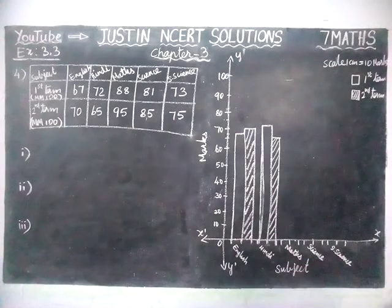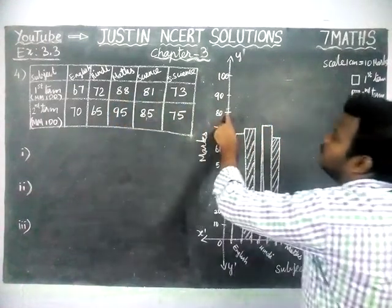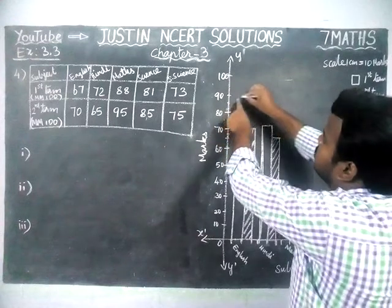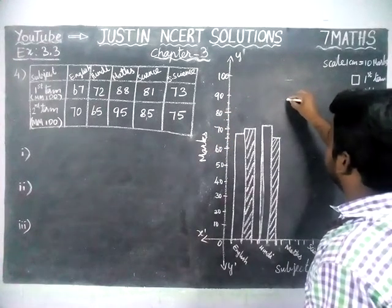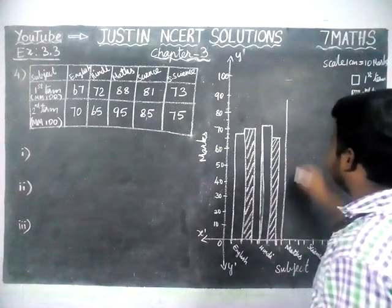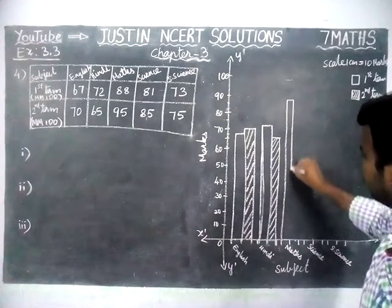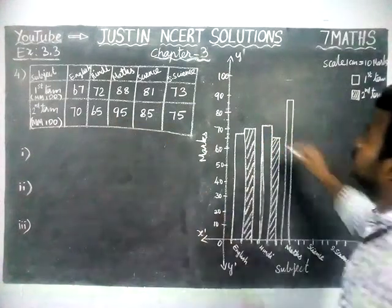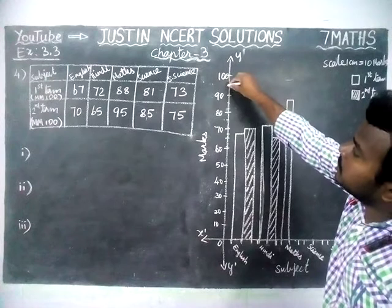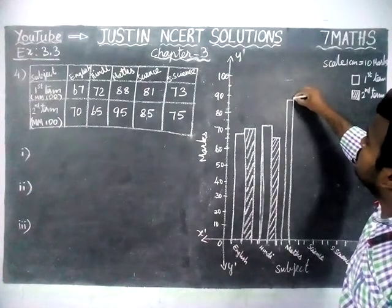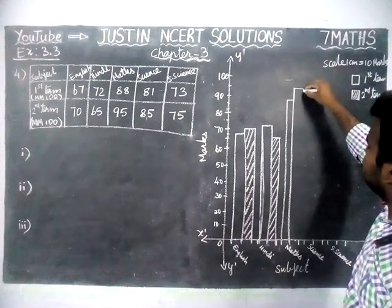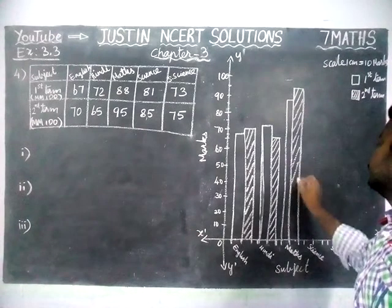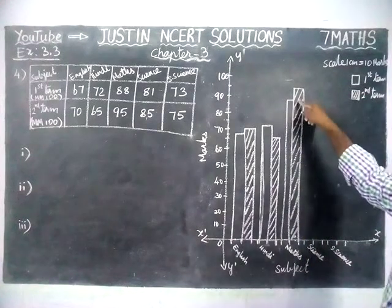Next, maths. In maths, first term has 88 marks. In between 80 and 90, the center point is 85, then 86, 87, 88. So we draw the bar up to 88 marks in first term. Then for second term, maths mark is 95. After 90, the center point is 95. So we extend this up to 95 and use cross lines for second term.